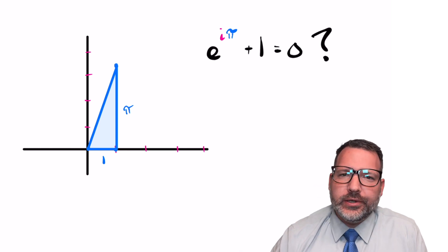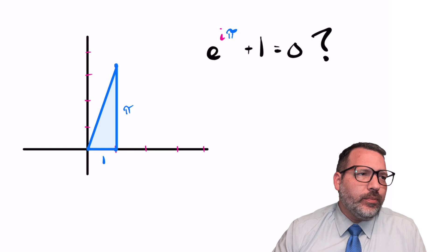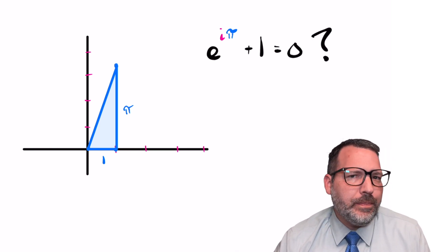Imagine we were going to do something strange, like draw a triangle. That's not the weird part. Let the base of that triangle be 1, also not so strange, but let the height of that triangle be π.